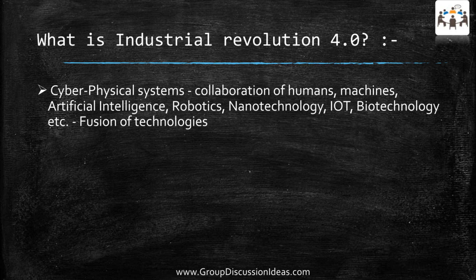Examples of the fourth industrial revolution are the Pokémon Go game, which uses augmented reality, and driverless cars which can communicate with each other and can reduce the number of road accidents. Most road accidents happen due to human error, so these are the examples of the new industrial revolution.